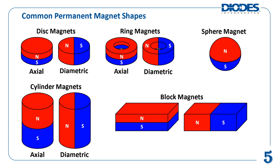These three magnet shapes are most commonly axially magnetized, which means the magnet is magnetized along its geometric axis. That is, the north and south poles are located on the opposite, flat surfaces of the magnet. However, these magnets can be diametrically magnetized, which means the magnet is magnetized through its diameter. That is, the north and south poles are located on the opposite, curved surfaces of the magnet.